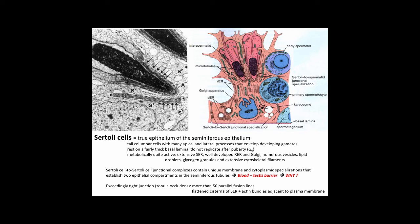Sertoli cells are metabolically quite active. They have an extensive smooth ER, a well-developed rough ER and Golgi complex. They contain numerous vesicles, lipid droplets, glycogen granules, and fairly extensive cytoskeletal filaments.